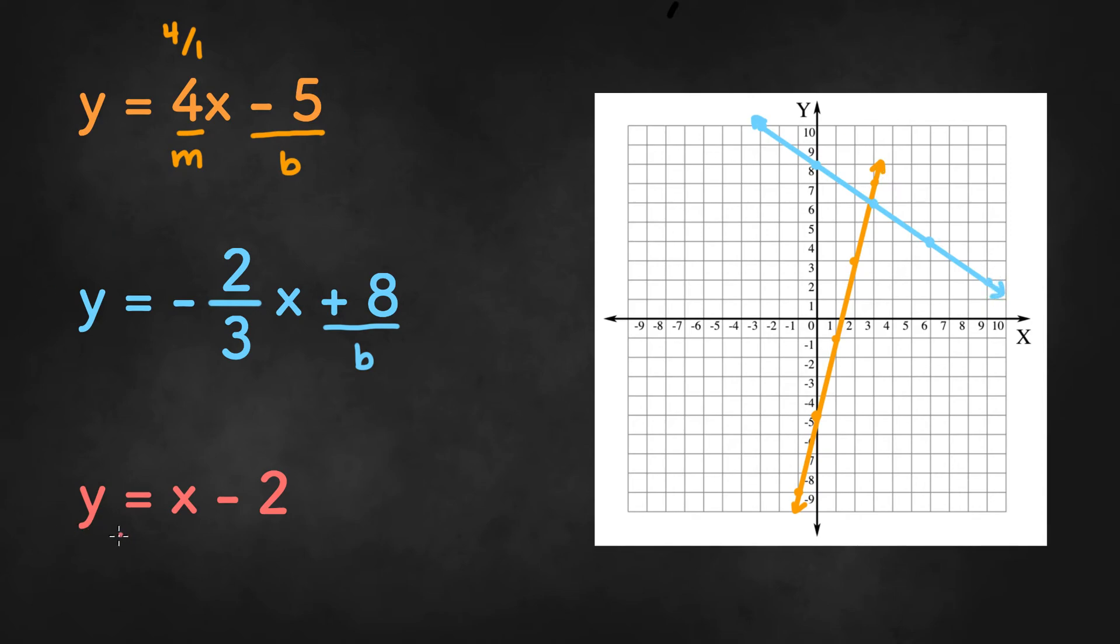Now in the last example we have y equals x minus 2. So we're going to start by plotting the y-intercept negative 2. It's just going to be right here.